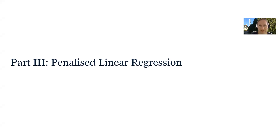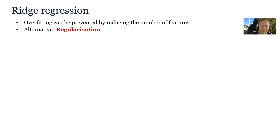In the third part of the lecture we will discuss penalized linear regression. We have seen that overfitting in multivariate linear regression can be prevented by reducing the number of features. An alternative to that is to keep the same features but to regularize the model instead.